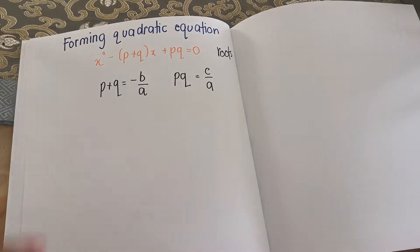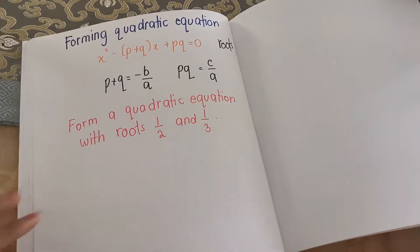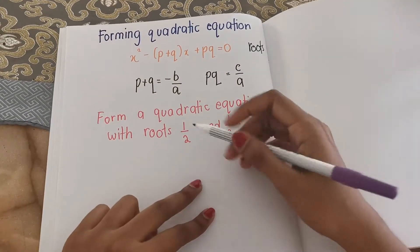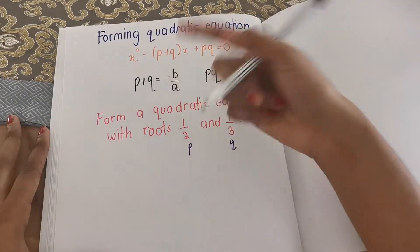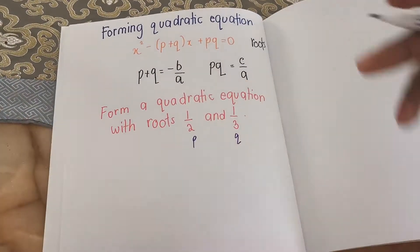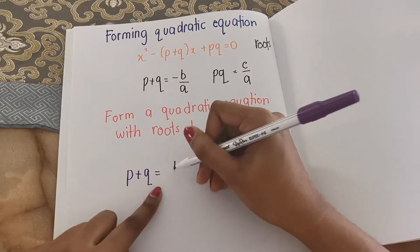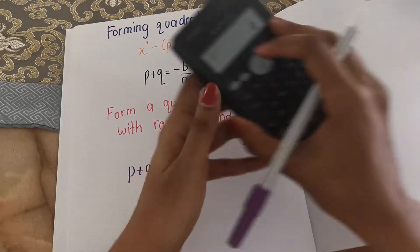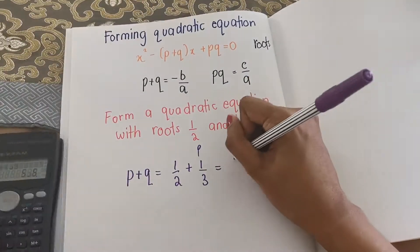Let me give one simple example so that you can see how this is applied. Form a quadratic equation with roots 1/2 and 1/3. So given 1/2 and 1/3, let's say this is our P and this is our Q. To get our B, we have to add, so P plus Q. So what is P plus Q? P plus Q is 1/2 plus 1/3, which is 5/6.